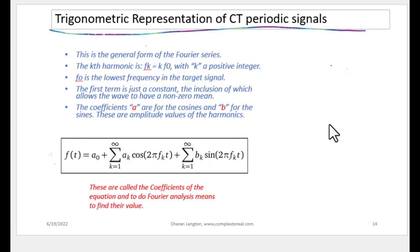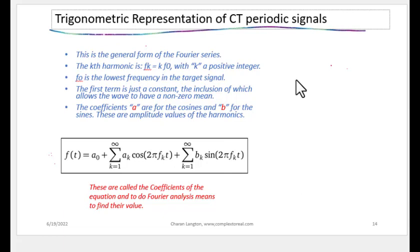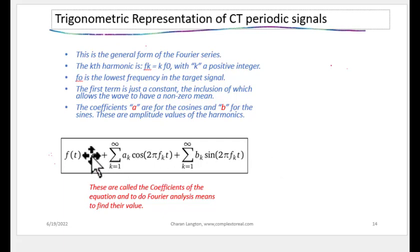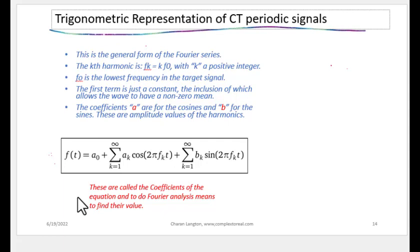The Fourier series equation in general form: the k-th harmonic is k times f0, where f0 is the fundamental frequency. The first term a0 is a constant that shifts the whole signal up or down from zero — often called a DC shift. The coefficients a0, ak, and bk are the amplitudes for the cosine and sine terms at each harmonic frequency k. Finding these coefficients is the purpose of Fourier analysis.